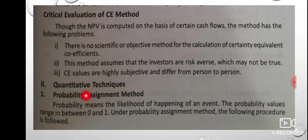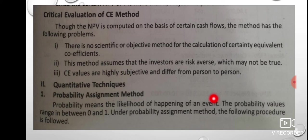The next technique is a quantitative technique: the Probability Assignment Method. Probability means the likelihood of happening of an event — chance is a probability. For example, in one coin toss, head or tail — the chance is a probability. The probability values range between 0 and 1.